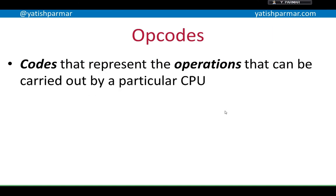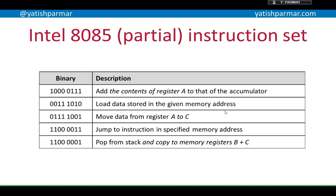Now, if you remember back, you will remember that an instruction is made of opcodes — these are the codes that represent the operation that can be carried out with the CPU. Operation and code joined together creates the word opcode. This is the partial instruction set for an Intel AE85 processor. You can see on the left-hand side in the table the binary opcodes, and on the right-hand side there's a description of what that instruction carries out.